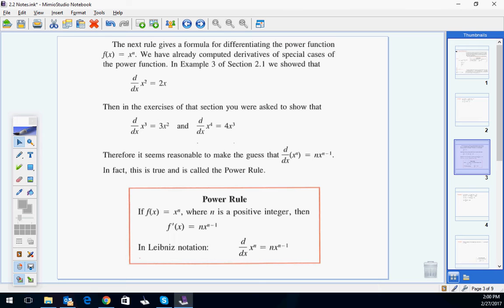So the next rule gives us the formula for differentiating the power function of f of x equals x to the n. We've already computed derivatives of special cases of the power function. Example 3 and 2.1 we showed that d of dx of x squared is 2x, and we did it the long way. But by the power rule, which is right here, the one we wrote down on Friday, is that derivative with respect to x in this situation with the power is you drop the n, drop the exponent, and then you take one off the exponent, and that's the derivative. So for x squared, you drop the 2. The 2 is in front. 2 minus 1 is a 1. So that's a 1 up there. That's the power rule. So when you're doing the derivative, you drop the power in front. If there's something out there, you multiply it. We're going to go over that.